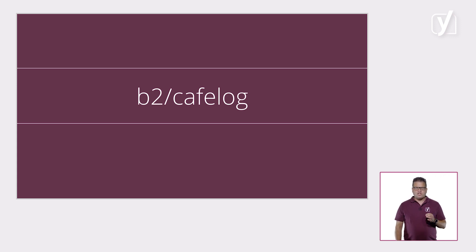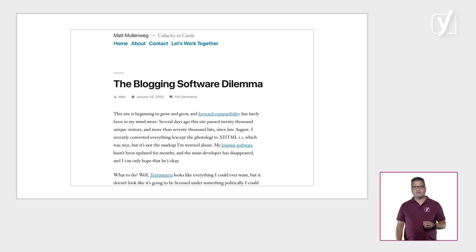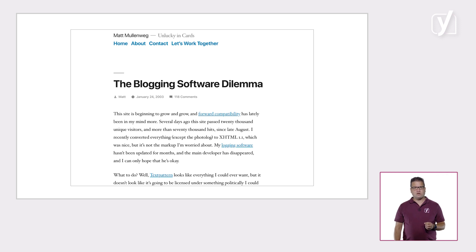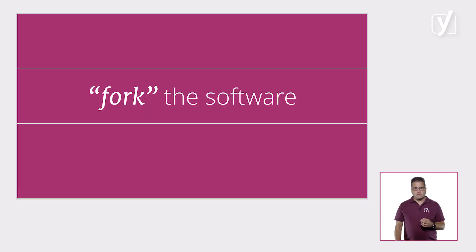Matt was a blogger, so the first natural thing that came to him was to blog about it. In the historical post "Blogging Software Dilemma," he wrote that he was considering taking matters into his own hands and using the B2CafeLog code to fork the software.